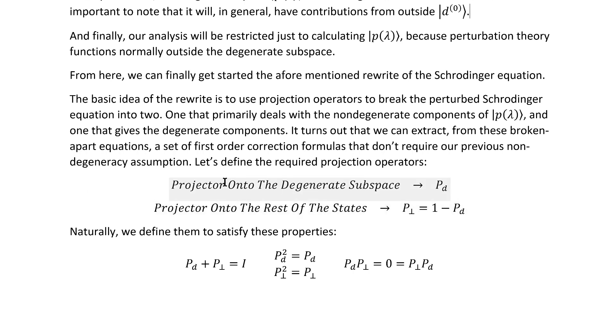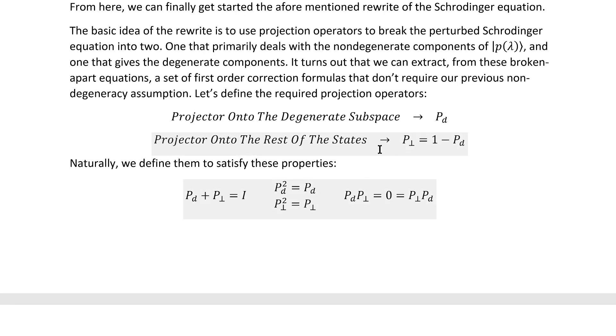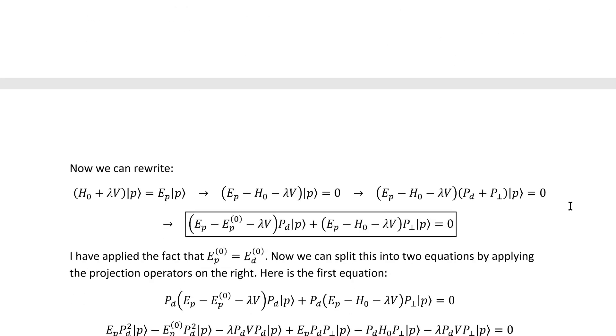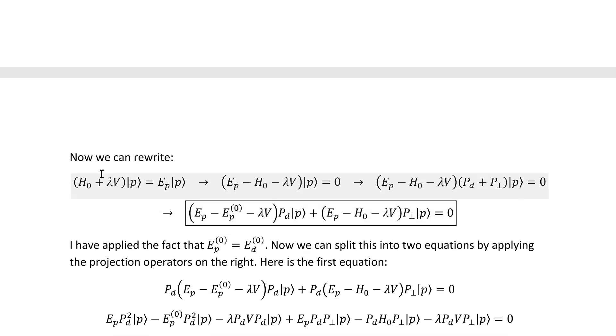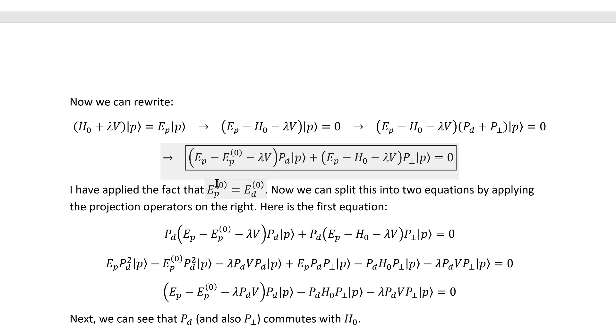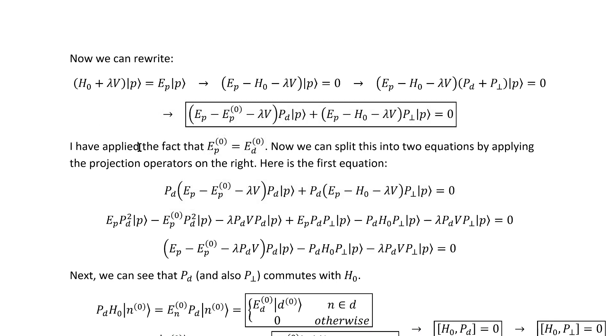Let's define the required projection operators. First, we have one that projects onto the degenerate subspace. It's no more specific than that, that I've denoted P_D. And then we have the one that's orthogonal to that. It projects onto the rest of the states, the non-degenerate ones. Naturally, they satisfy the usual properties of projection operators. Now, we can actually carry out the rewrite. So, we start with the perturbed Schrödinger equation. We rewrite it like this, introduce this sum of the projection operators, which is just equal to the identity, and then we distribute. You'll notice that I applied the fact that E_P and E_D are the same, because the P-naught and D-naught states just differ by a change of basis within the degenerate subspace. Now, we can split this into the two equations, as I was talking about, by applying the projection operators again from the left.